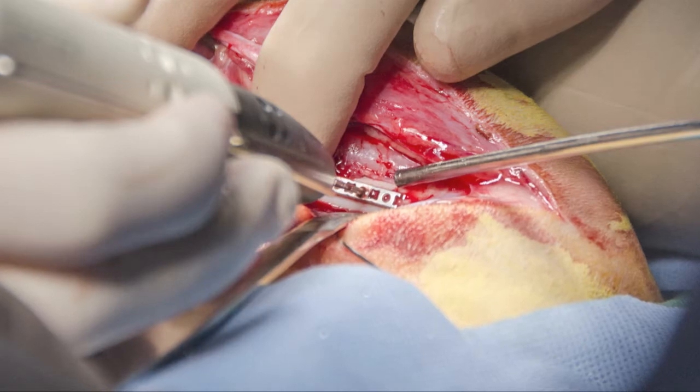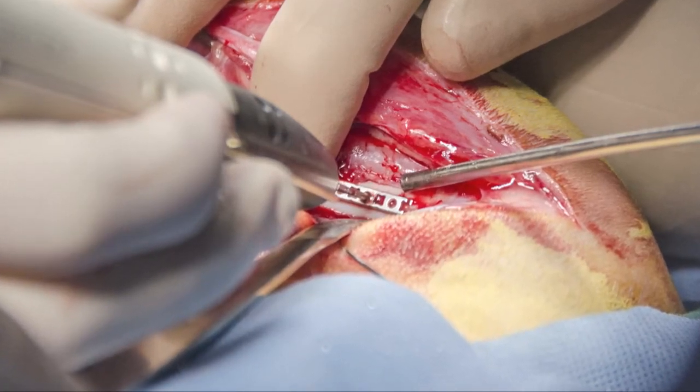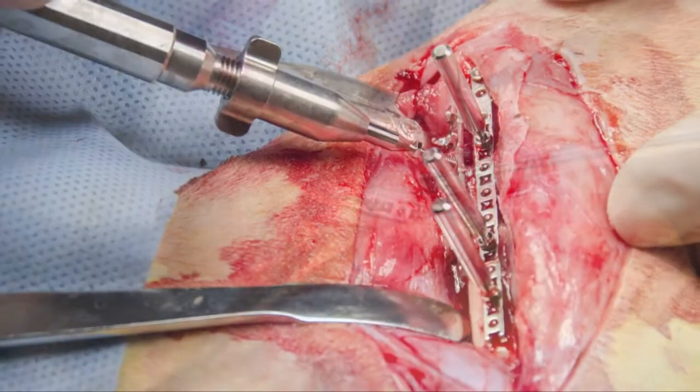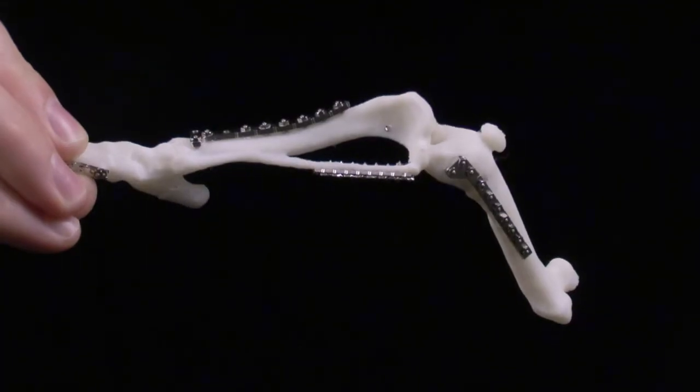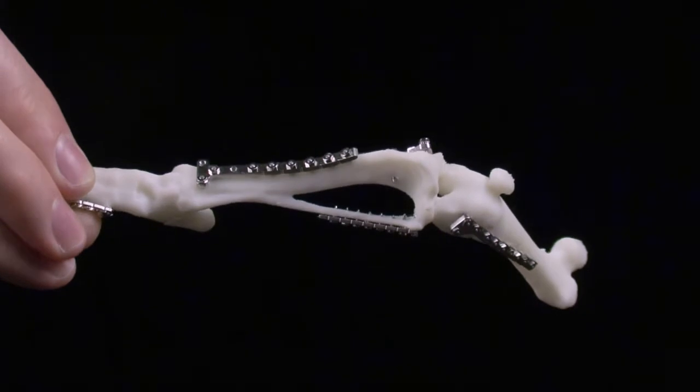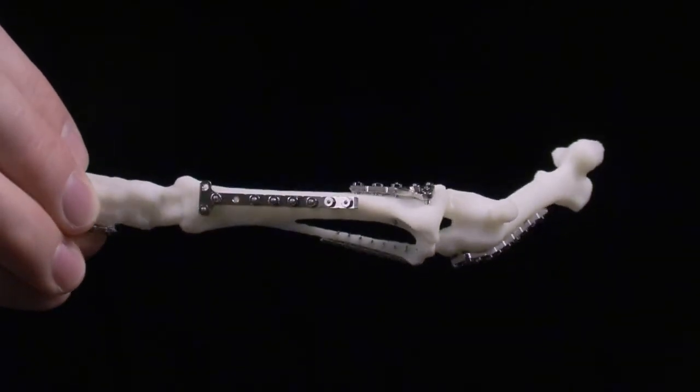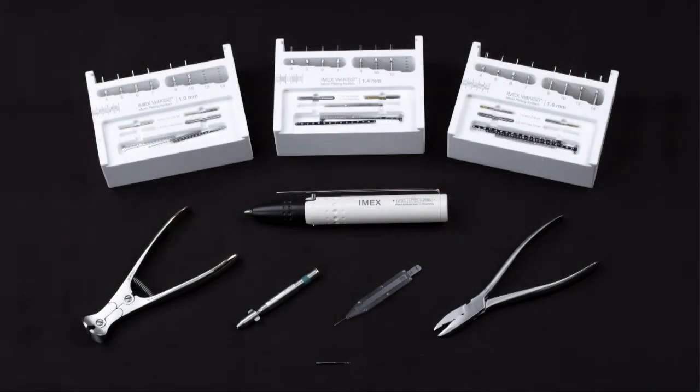The VetKiss micro bone plating system is a veterinary locking plate osteosynthesis system designed for very small bones. A separate tutorial has introduced the VetKiss or keep it simple surgeon concept, as well as the implants and instruments.